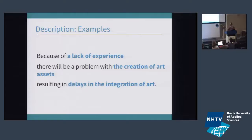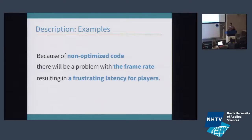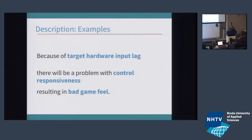Another example: because of non-optimized code, problems with frame rate resulting in frustrating latency — this might be a performance problem. For instance, if you would have input lag in your game, it would severely lead to bad game feel. This might be a risk in your project. Through prototypes and research, you might need to see if you can overcome that. But if you can't, what other solutions do you have to still make the game work with that input lag?